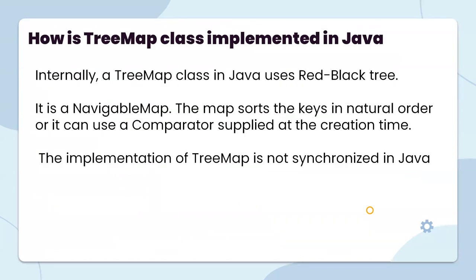How is the TreeMap class implemented in Java? Internally, a TreeMap class in Java uses a Red-Black tree. It is a NavigableMap. The map sorts keys in natural order, or it can use a Comparator supplied at construction time. The implementation of TreeMap is not synchronized in Java.